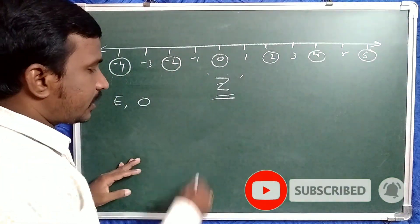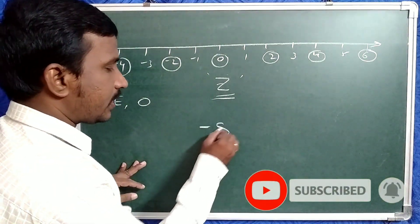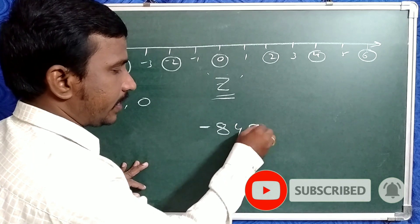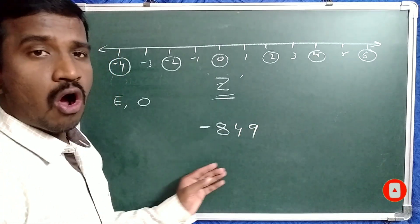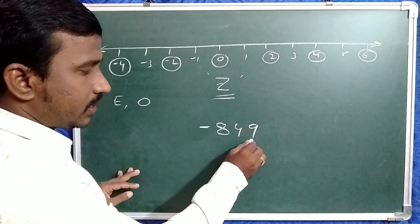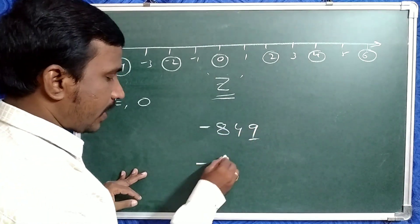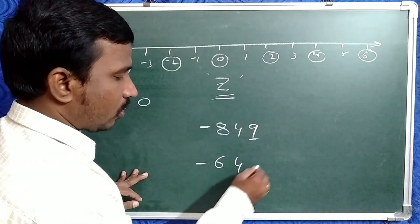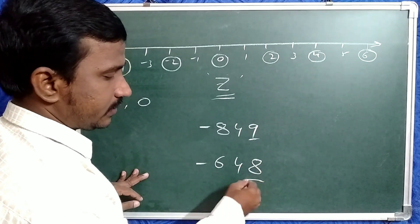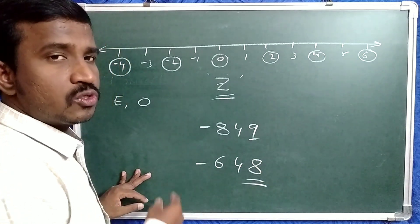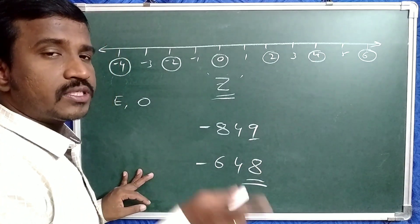Suppose given minus 849 — it is an odd number because 9 is in the units place. Suppose given minus 648 — it is an even number. So even numbers can be negative as well.